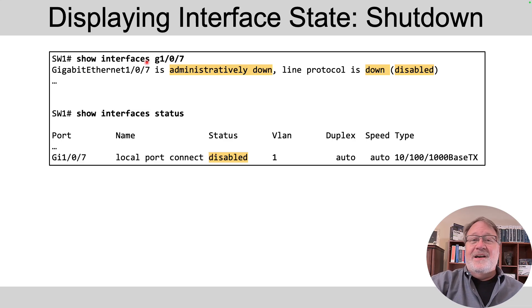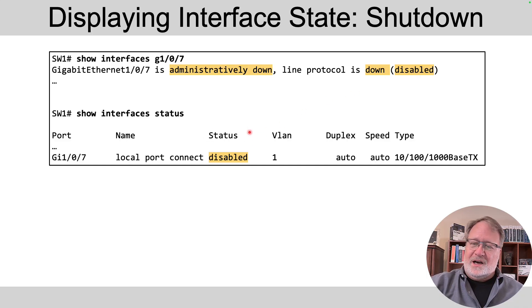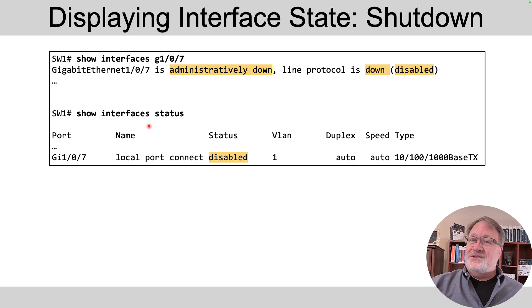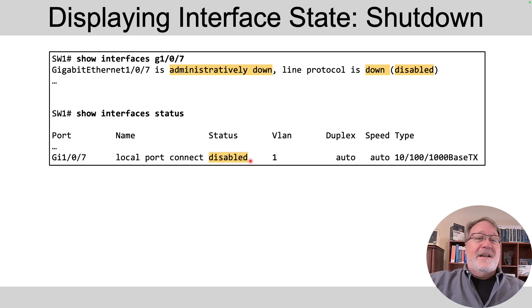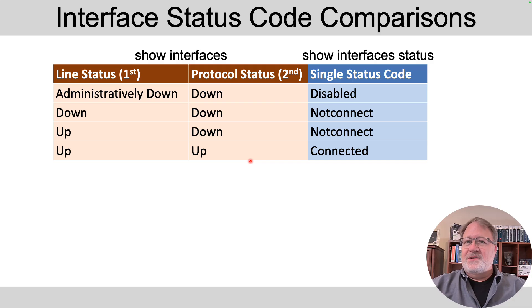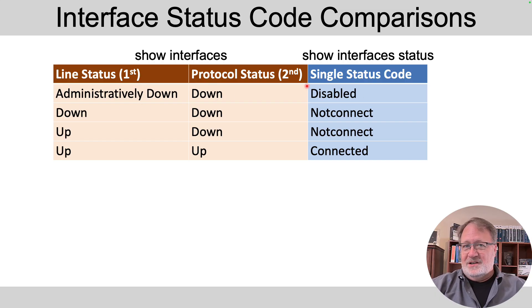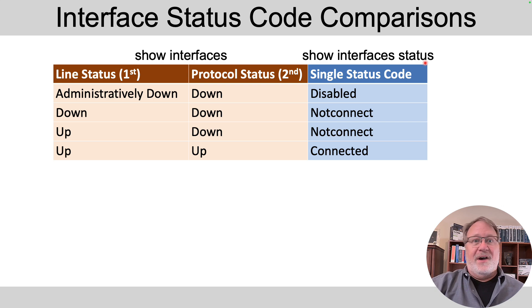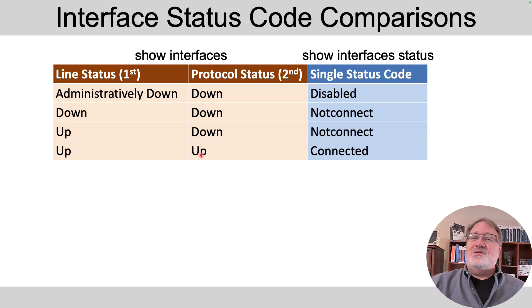So there are two different ways to see the status: the two-word way and the one-word way. What you want to remember is if you shut down an interface, expect to see 'administratively down / down' in 'show interfaces' and 'disabled' in 'show interfaces status'. More broadly, there are other combinations when the interface is not shut down. The one we want is the two-word status code 'up / up', meaning the interface is up and working. In the single-word status, Cisco uses the word 'connected' for that case.